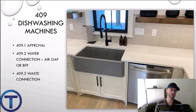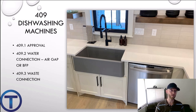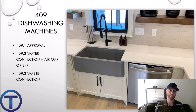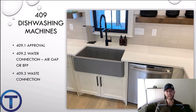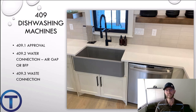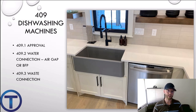In 409, we learn about dishwashing machines. 409.1 covers standards and approvals. 409.2 states that the water connection has to be through an air gap or a backflow preventer — like the washing machine, this air gap is built into the dishwasher. The waste connection can be either an air gap or an air break, and we go into more detail on the waste connection in chapter eight when we look at indirect waste.